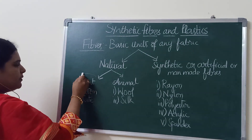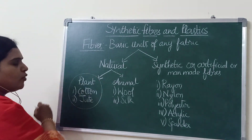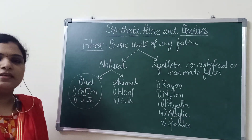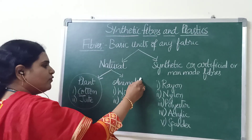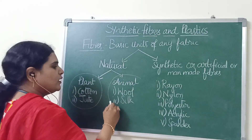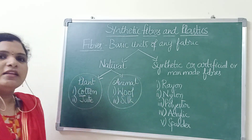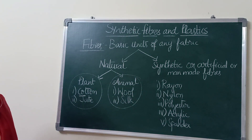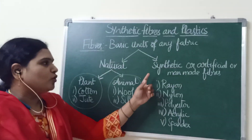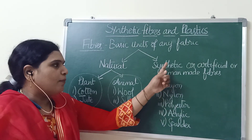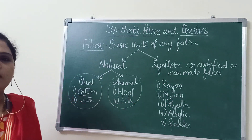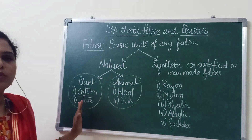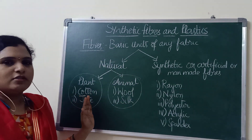These plant fibers — cotton and jute — were already studied in 6th class. These animal fibers — wool and silk — were studied in 7th class. So in 8th class, you have the topic about only synthetic fibers, because you have already gone through natural fibers.